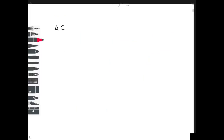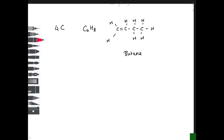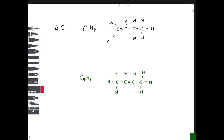For C₄H₈ (butene), there are two structural isomers — compounds with the same molecular formula but different structural formulas. In but-1-ene, the double bond is between the first and second carbons; in but-2-ene, it is between the second and third carbons. Isomers are named according to the position of the double bond.